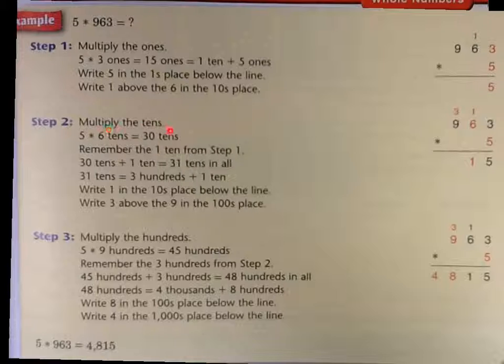Step 2, multiply the 10's. 5 times 6 tens is 30 tens. Remember the 1 up top, so we add that. So we have 30 tens plus 1 ten equals 31 tens in all. 31 tens is 3 hundreds and 1 ten. So 60 times 5 is 300, plus 1 ten is 310. We put the 1 down, carry the 3.